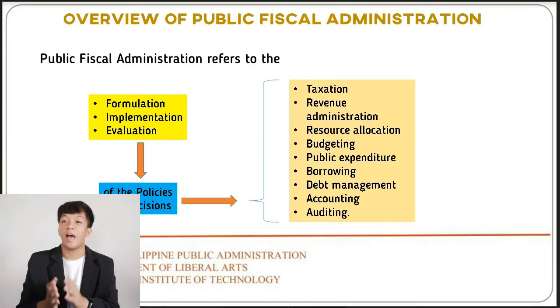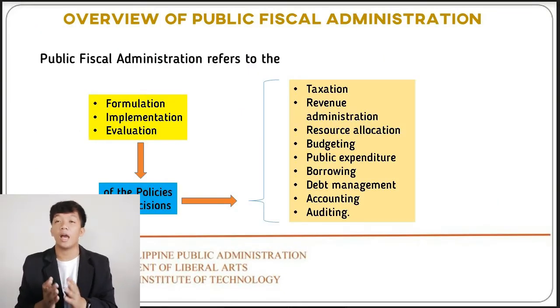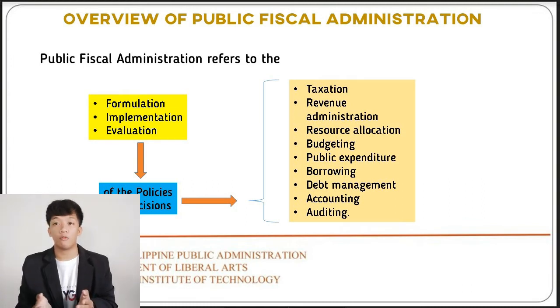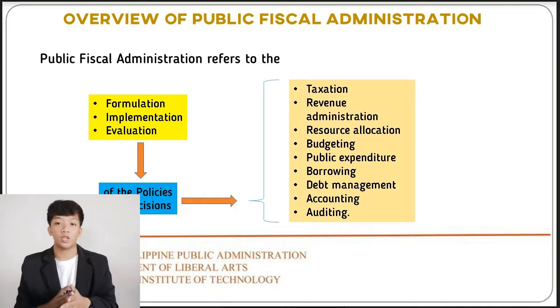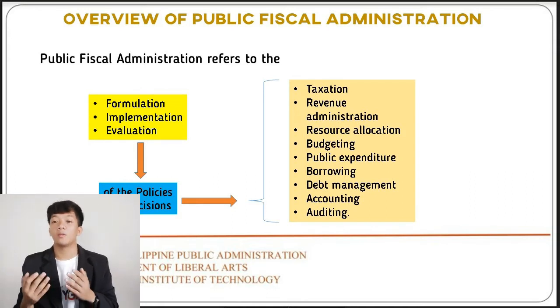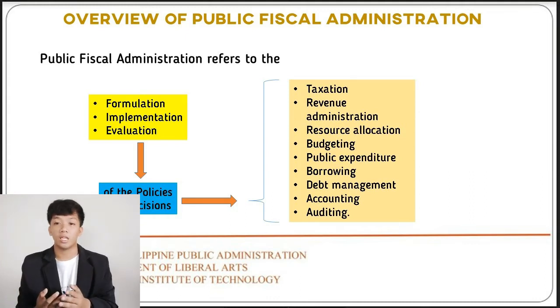First, we have to define what fiscal administration is. Fiscal administration is the act of managing incoming and outgoing monetary transactions and budgets of governments, educational institutions, non-profit organizations, and other public service entities. It also refers to systems, processes, resources, and the policy environment governing intergovernmental and interlocal fiscal relations affecting among others.